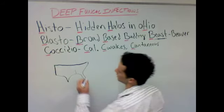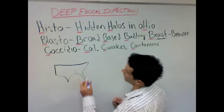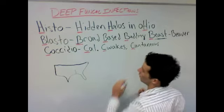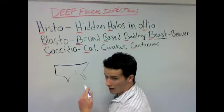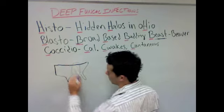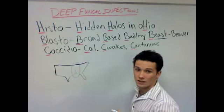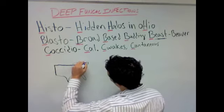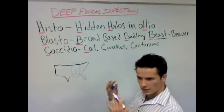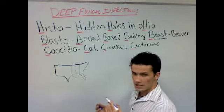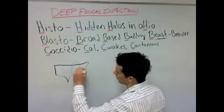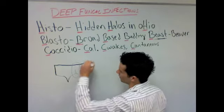So let's go over this. Histo was in Ohio and south with the Mississippi — we're looking at right there on the map. The broad-based budding beast is in the east — we're looking at right there.